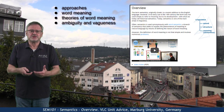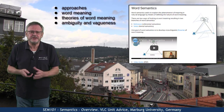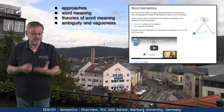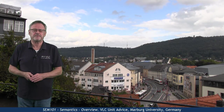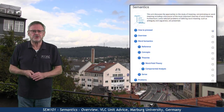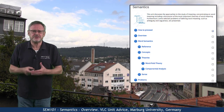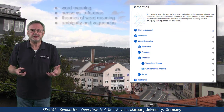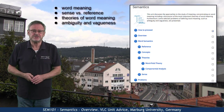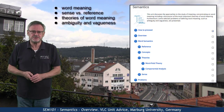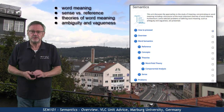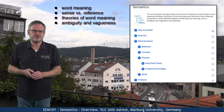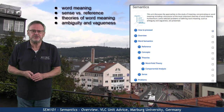Furthermore, some selected problems of defining word meaning, such as ambiguity and vagueness, are presented. In the content units, which contain several e-lectures and micro-teaching videos, we will look at word meaning, draw a distinction between sense and reference, including theories of word meaning, and we'll end up with some selected problems such as ambiguity and vagueness.